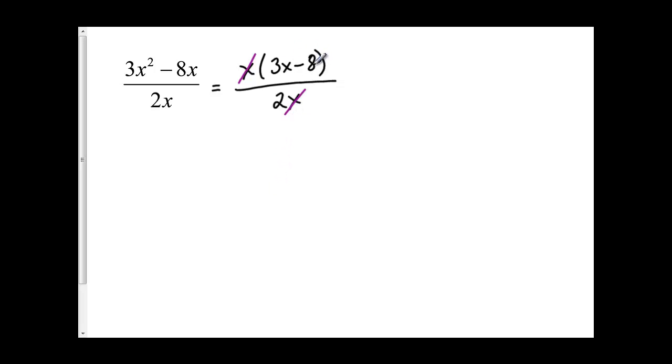I've got a minus 8 attached to it, so it's not the same as just having an x. Since there's nothing else I can cancel out, my top is going to be 3x minus 8. My bottom is going to be 2.